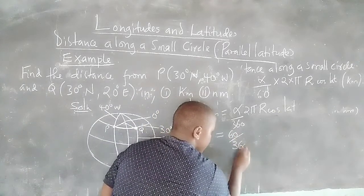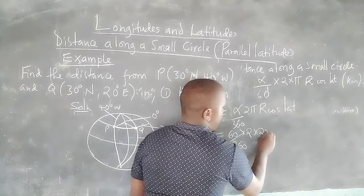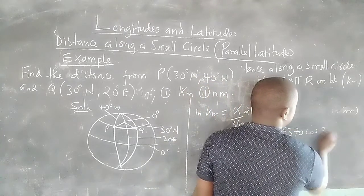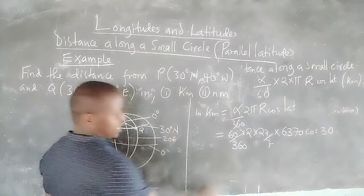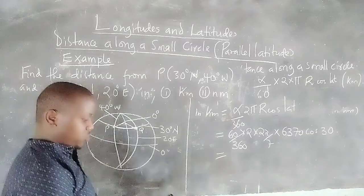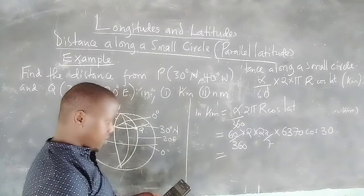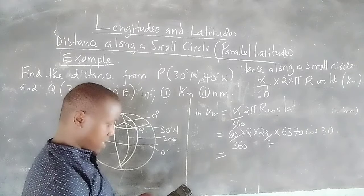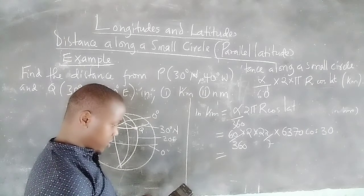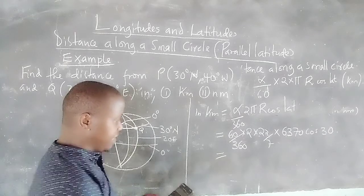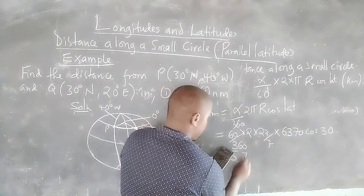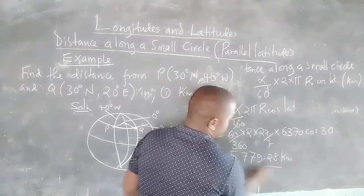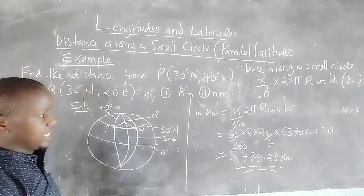We calculate: (60/360) × 2π × 6370 × cos(30°). This gives us 60 × 2 × 22/7 × 6370 × cos(30°), divided by 360, and this gives us 5,779.28 kilometers. That is the distance in kilometers between the two places.